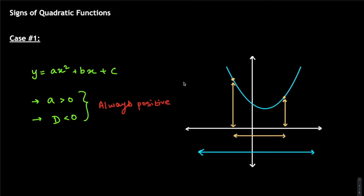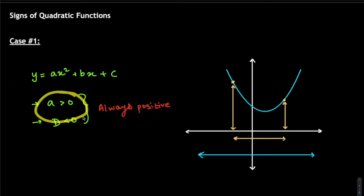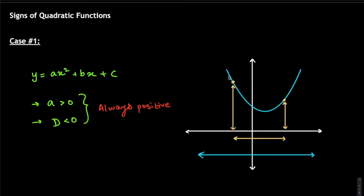So this case tells us that when a is greater than zero and D is less than zero, we always have an upward-facing parabola that doesn't touch the x-axis. It's always going to be in the positive y-axis area. Now let's look at a small example question.